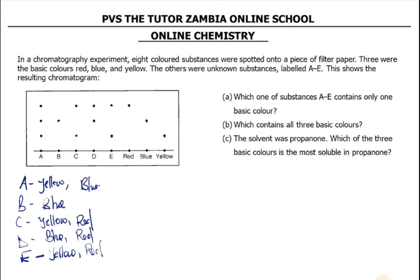So now the question: which one of A to E contains only one color? That is substance B, which contains only blue.